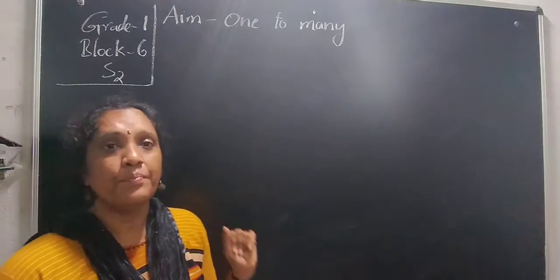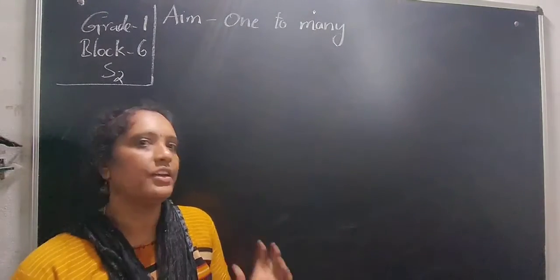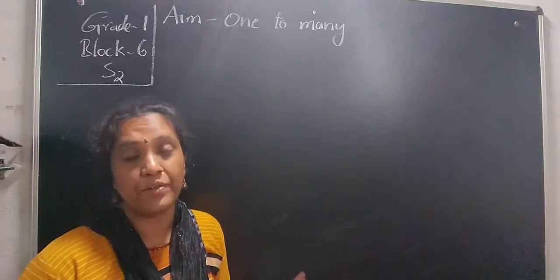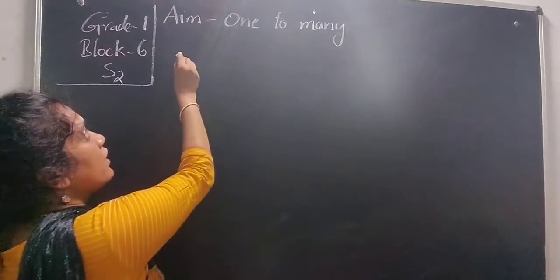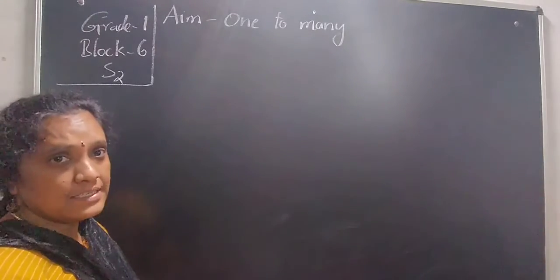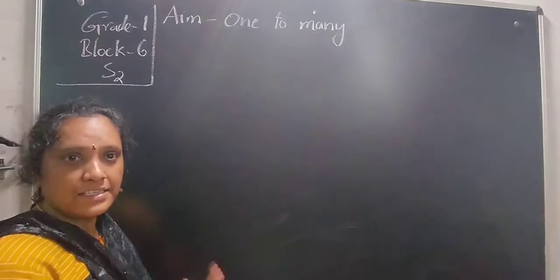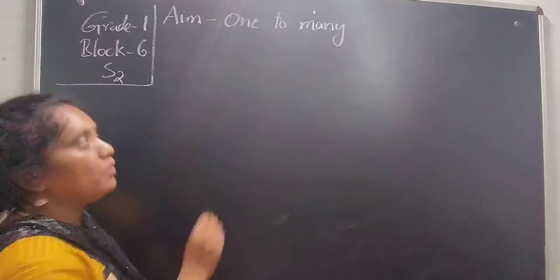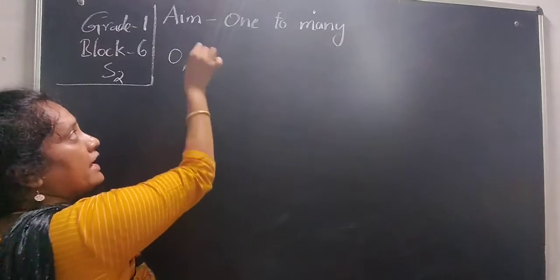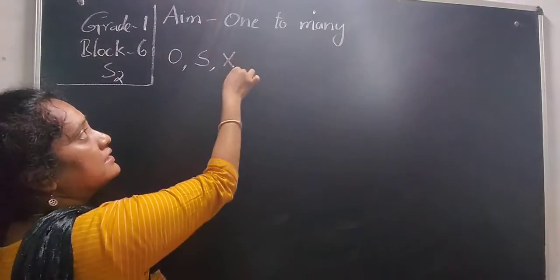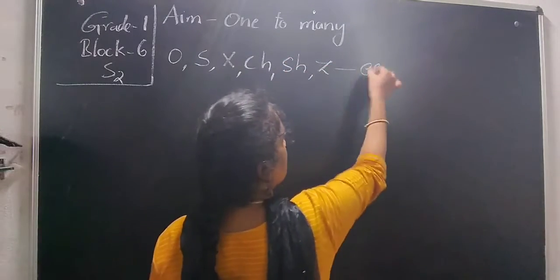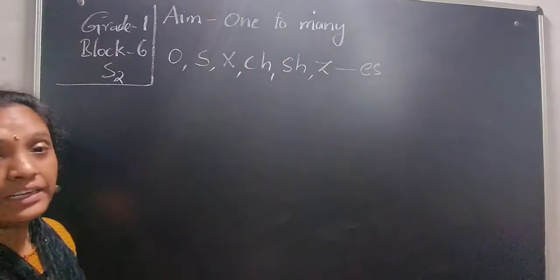So children, previously we have learnt the singular and plural forms. Today let us see some of them — how to change from one to many. We discussed that words ending with O, S, X, CH, SH, and Z can be written using the ES form. Based on that, how to change them.